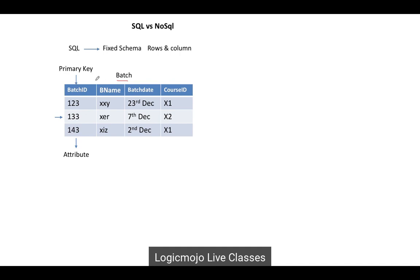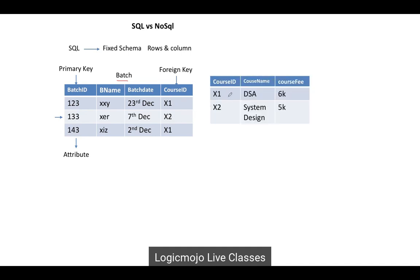In case of RDBMS, we have the primary key, which is the batch ID, and then we have the foreign key, which is linked with another table. So the course ID is the foreign key where we have values like X1 and X2. These two tables are related — that's why we call it a relational database, because we can use joins to connect multiple tables and create relations between them.